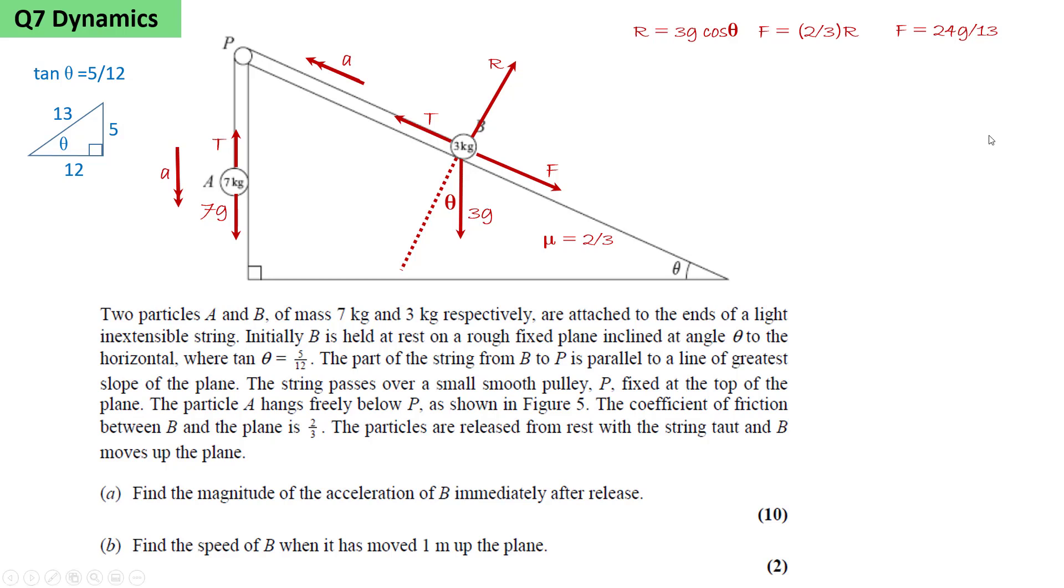Applying F equals ma for the particle B, we get T minus 3g sin theta minus F will be the resultant force up the plane, and this is accelerating 3 kilograms with an acceleration of a.